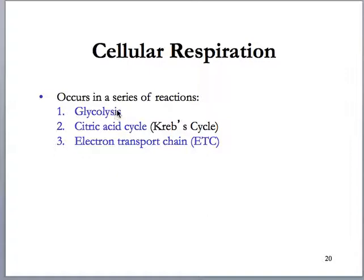Glycolysis is anaerobic, meaning it does not require oxygen in order to proceed. Glycolysis also takes place in the cytoplasm. The citric acid cycle and the electron transport chain require oxygen, so they are aerobic. Oxygen must be present for these two to run, and they take place in the mitochondria. So glycolysis is anaerobic, in the cytoplasm; the citric acid cycle and electron transport chain are aerobic and take place in the mitochondria.